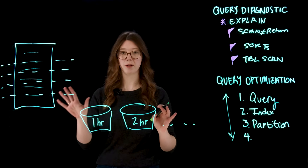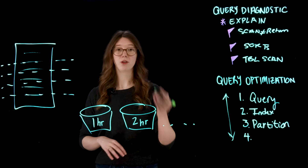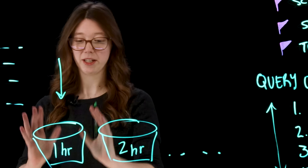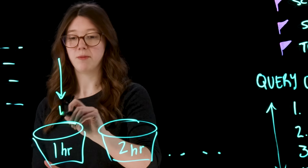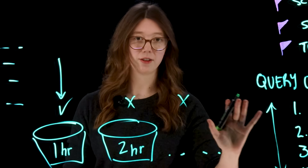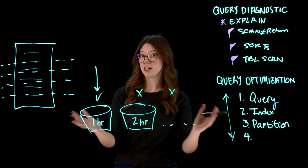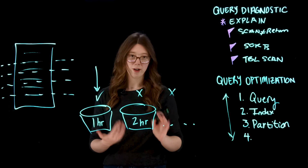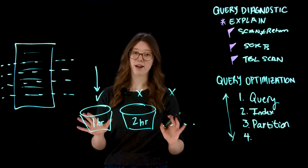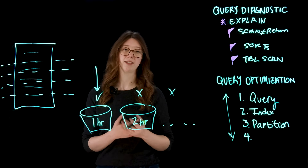Now if your query is 'show me all records from the last hour,' you can just search that one bucket. You'll find what you need and never need to look in any of the other buckets at all. And if you need to look at a distinct number of buckets, it doesn't have to be just one. Partitioning is a great tool when you have really large data volumes and queries and indexes aren't doing the trick.